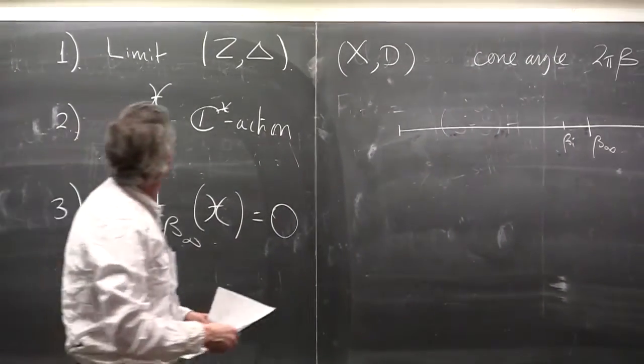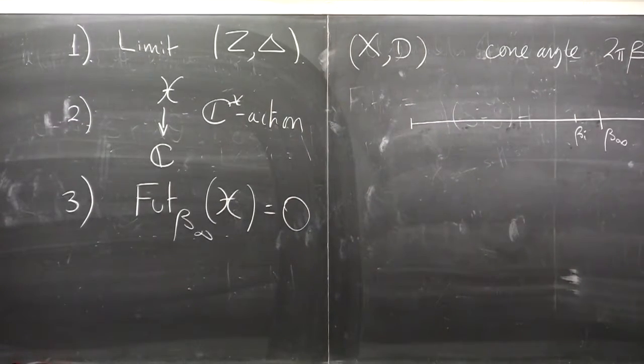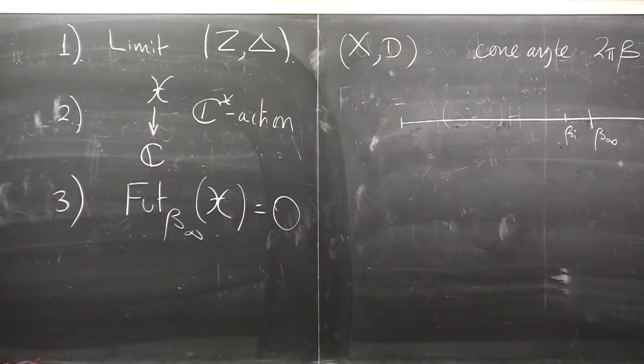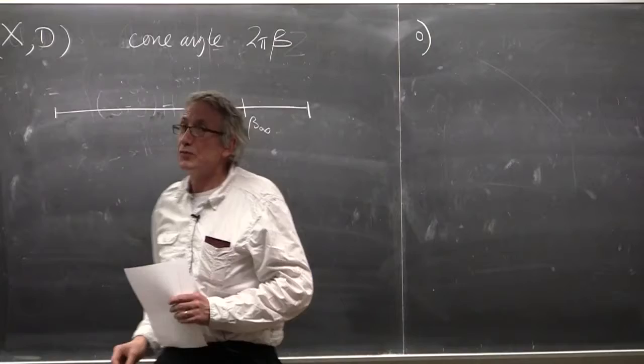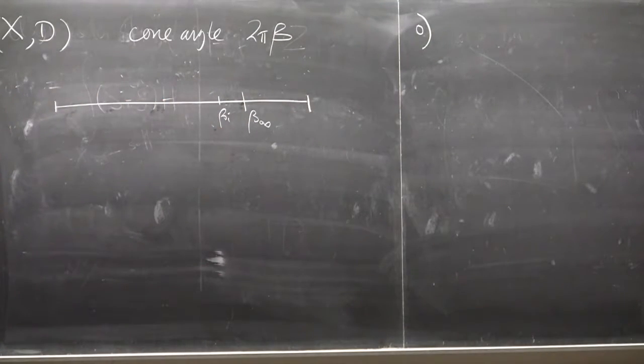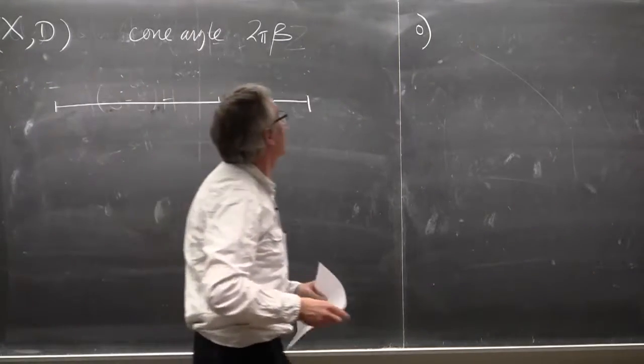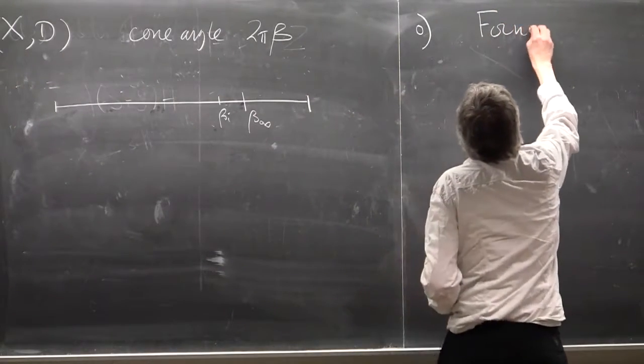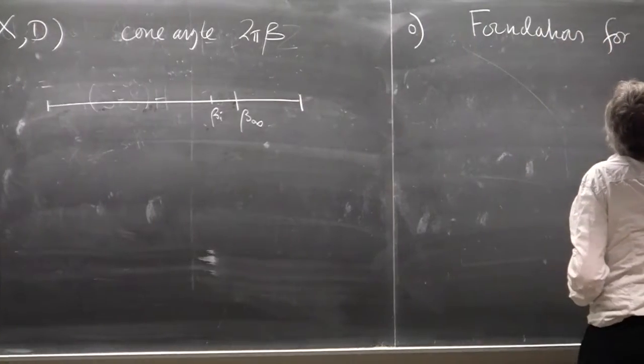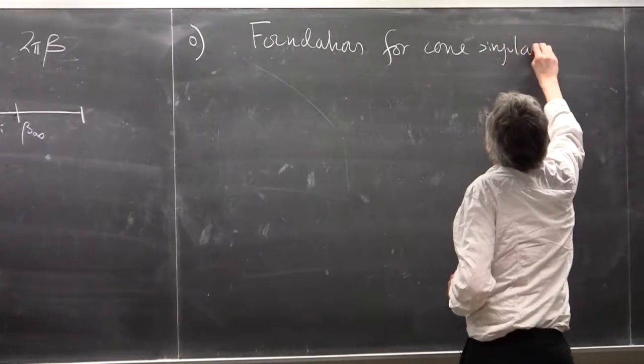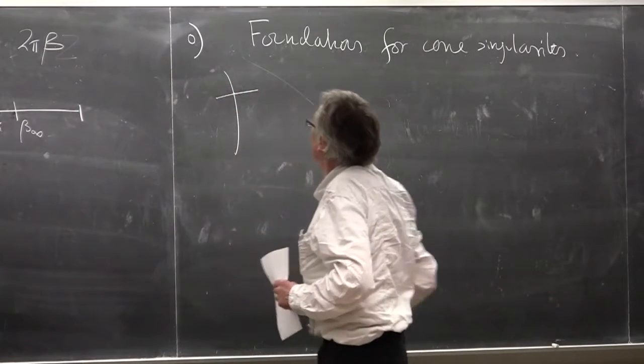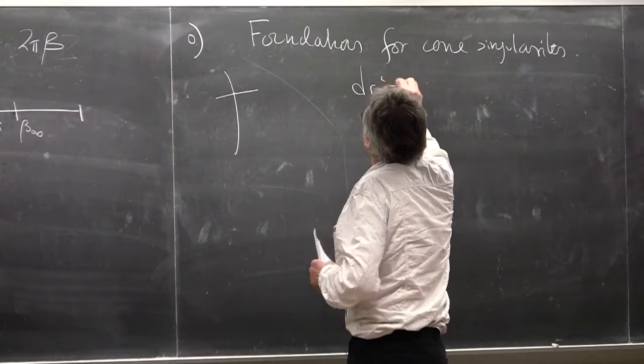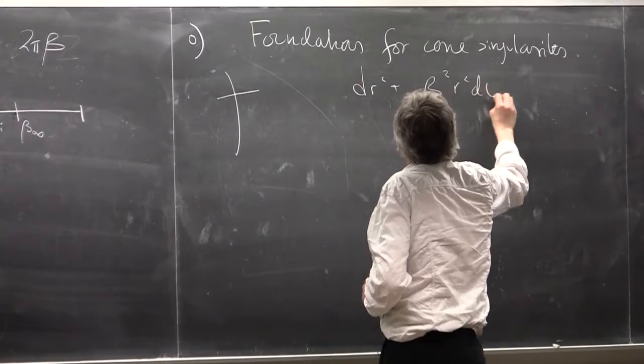I'm going to try to say something about these points. Before doing that, let's step back and say a few words about the foundations of studying these metrics with cone singularities. These are things that are modeled transverse to a divisor on the basic cone dr squared plus d theta squared.